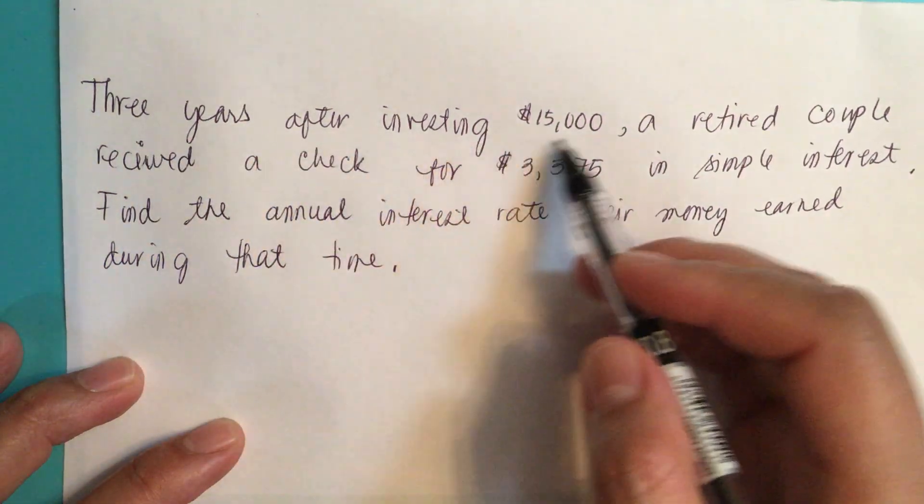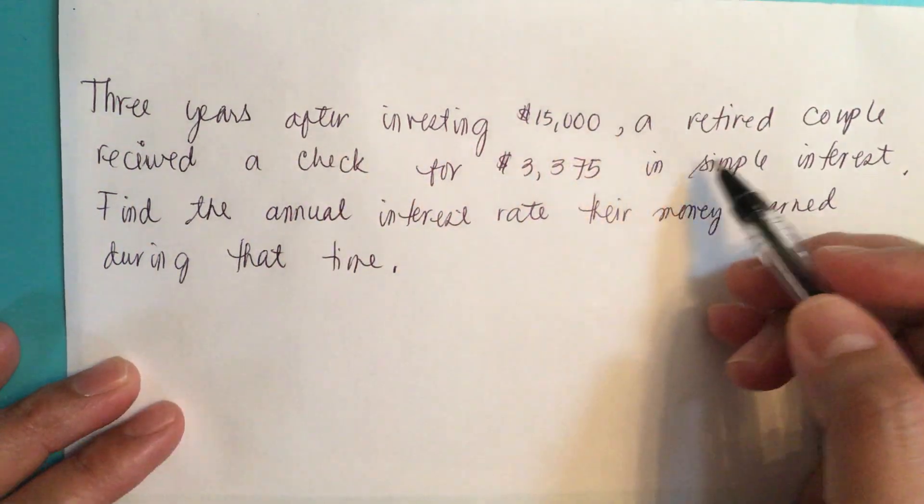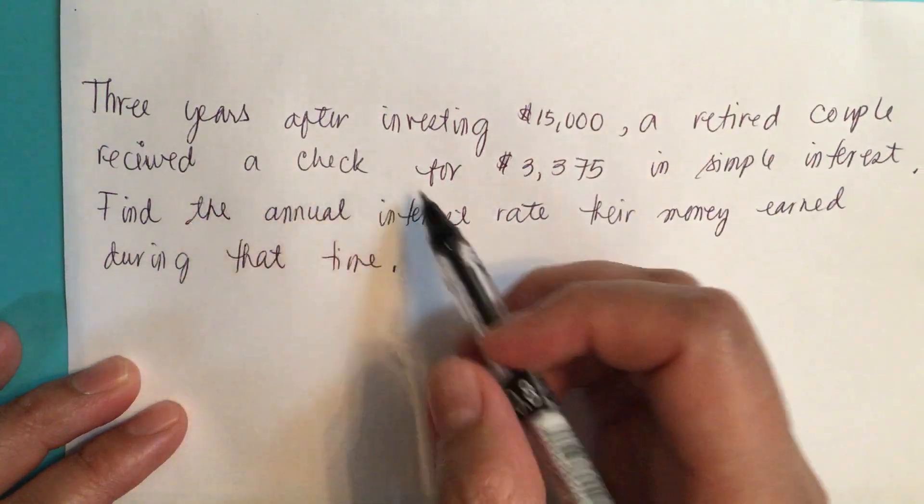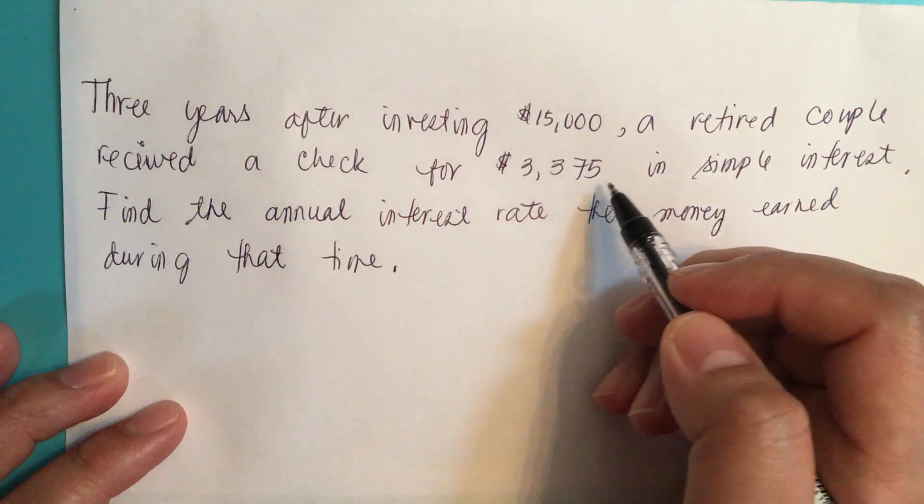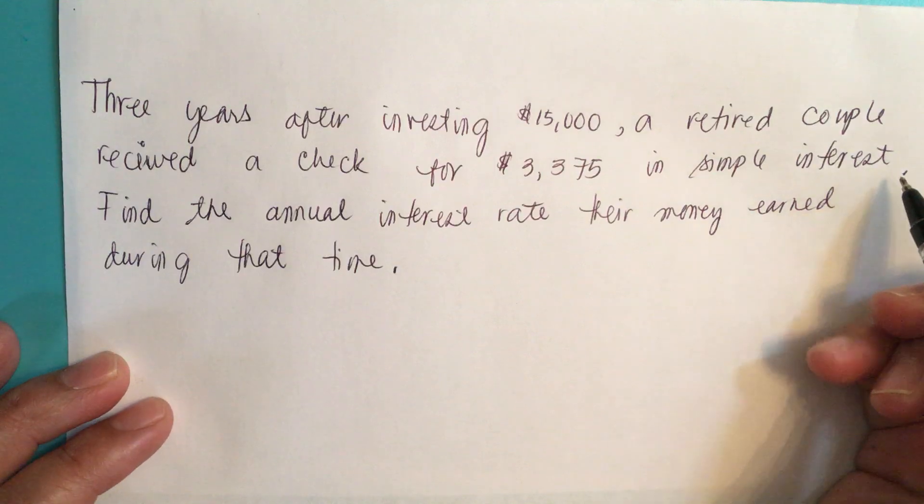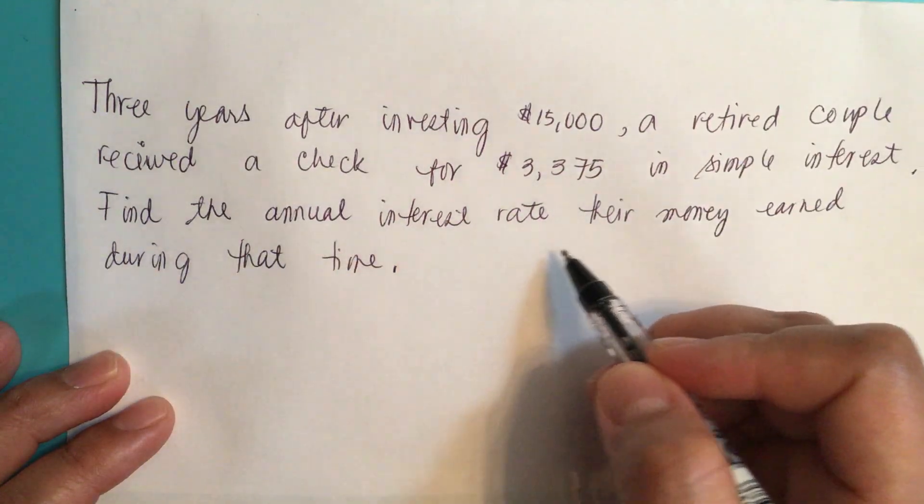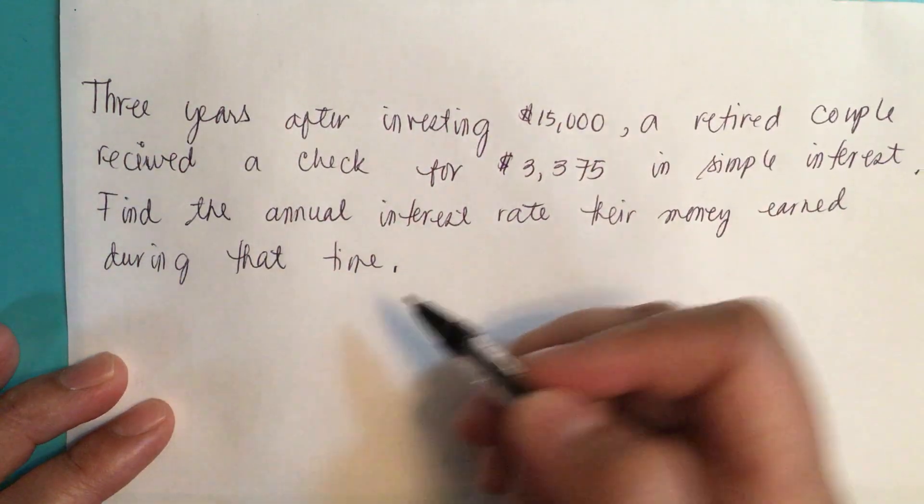Three years after investing $15,000, a retired couple received a check for $3,375 in simple interest. Find the annual interest rate that their money earned during that time.